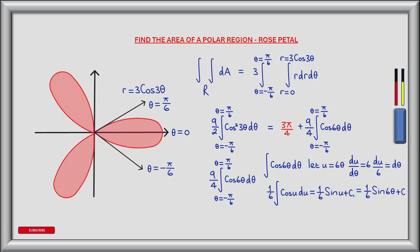Moving on to the second integral: 9 over 4 multiplied by the integral from theta equals minus pi over 6 to theta equals pi over 6 of cos 6 theta d theta. To evaluate this we use u substitution. Letting u equal 6 theta, du over d theta equals 6, so d theta equals du over 6. Substituting gives one sixth multiplied by the integral of cos u du. The antiderivative of cos u is sin u, so we have one sixth times sin u plus constant of integration. Substituting back, u equals 6 theta, giving one sixth times sin 6 theta plus a constant.